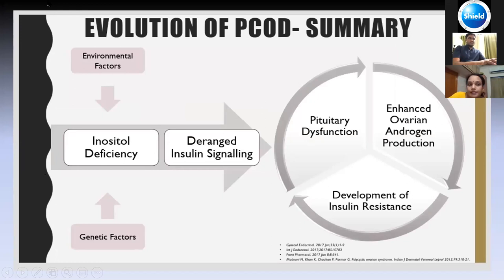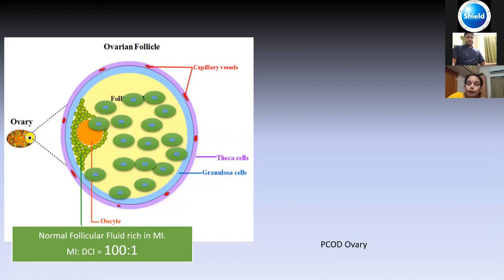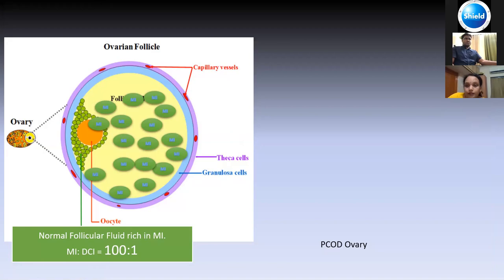A simple flowchart shows the evolution of PCOS. Multiple environmental and genetic factors lead to inositol deficiency, causing deranged insulin signaling, which causes hyperinsulinemia. Hyperinsulinemia stimulates LH production, resulting in increased ovarian androgenesis, which continues as a vicious cycle.